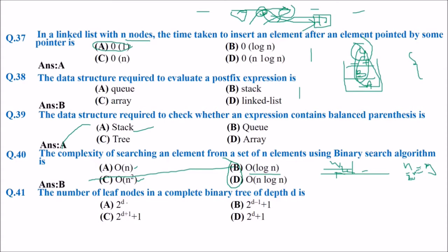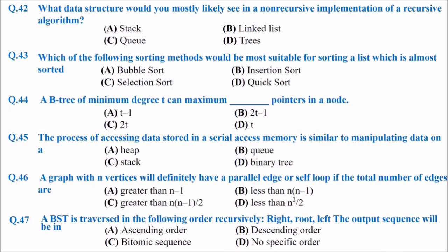The number of leaf nodes in a complete binary tree of depth D — we are talking about a complete binary tree, not a full binary tree. The answer is 2 to the power D.